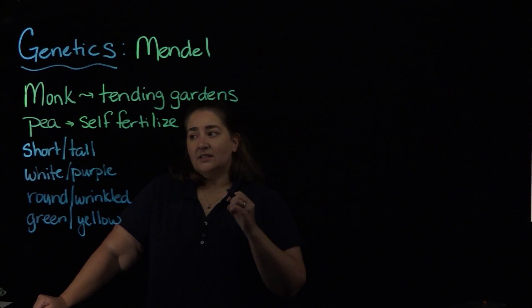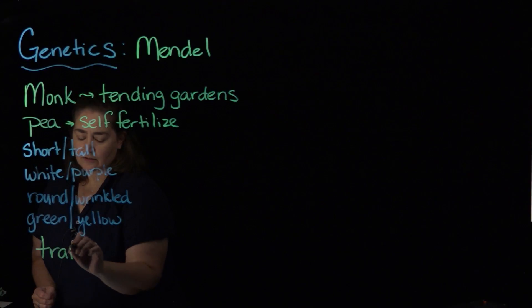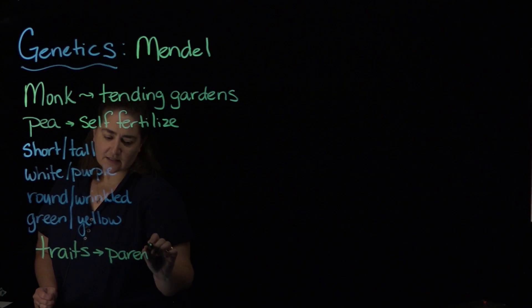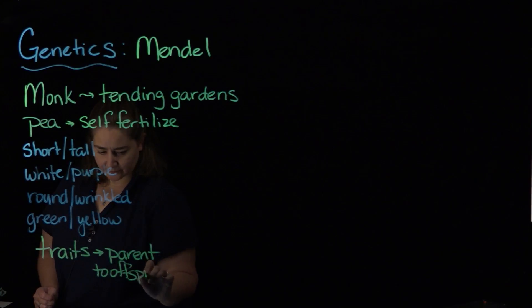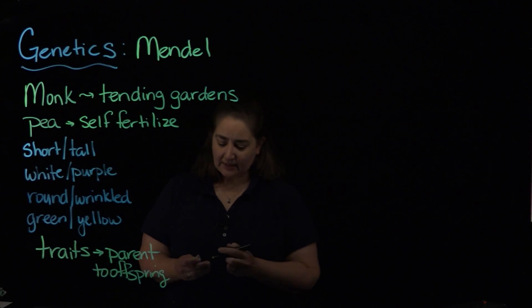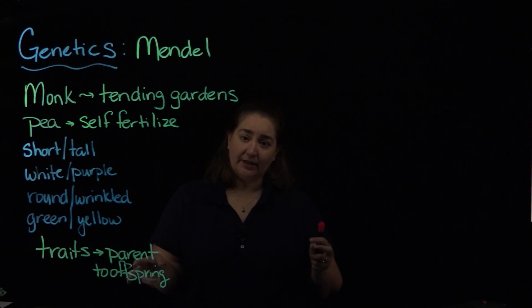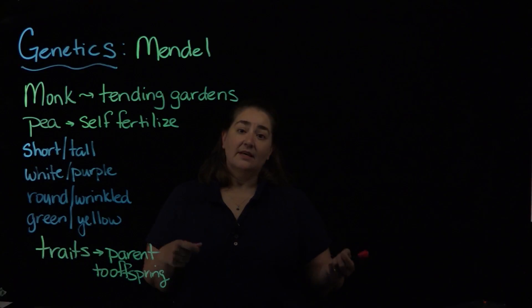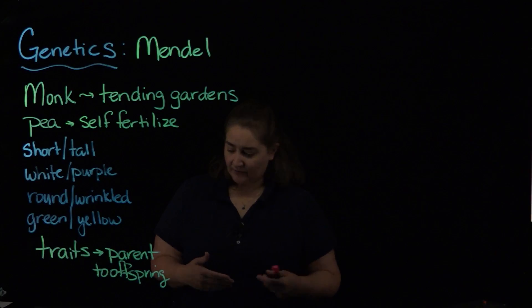And what he determined were that there were specific traits that were passed from parent to offspring. And he basically, out of doing that, was able to generate plants that were what he called true breeding, meaning they always gave, in the case of purple flowers, purple flowers, white flowers, white flowers. And then that's when he started mixing to kind of see how those traits sorted out.